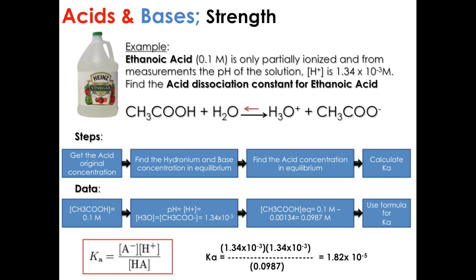Now, if Ka is around 1 times 10 to the negative 3 or more than that, we consider it a strong acid. In this case, the acid that we got is a weak acid.